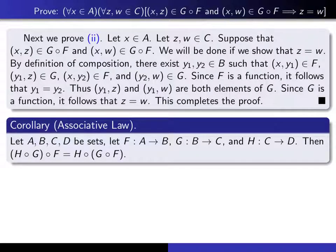As a corollary of this theorem — a corollary just means a theorem which follows fairly easily from a theorem that has just been proved — we get what's called the associative law, which says that if we compose three functions, it doesn't matter how we do the bracketing as long as we do things in the same order. The theorem guarantees that the inner composition is a function from A to C, and composing that with a function from C to D, the theorem again guarantees that the result is a function from A to D.